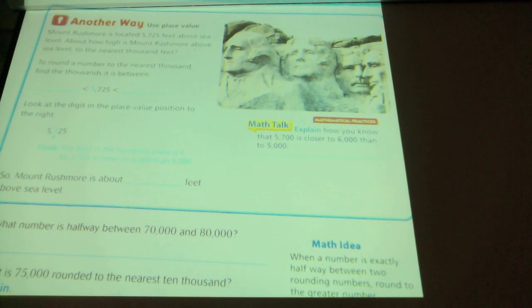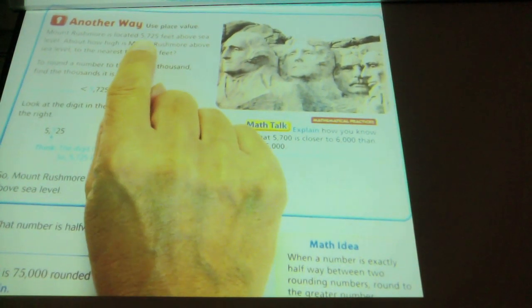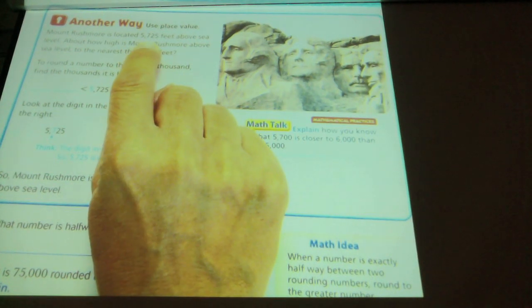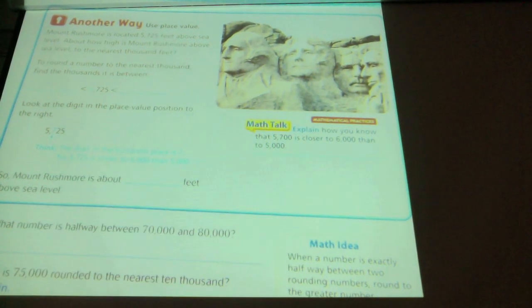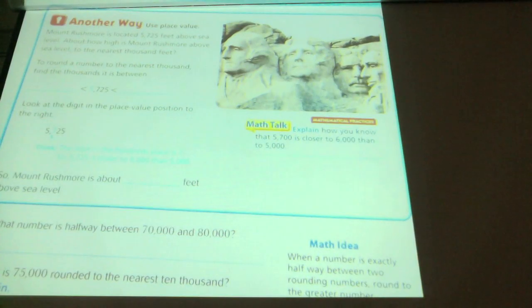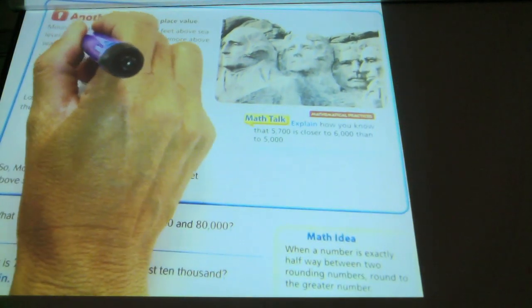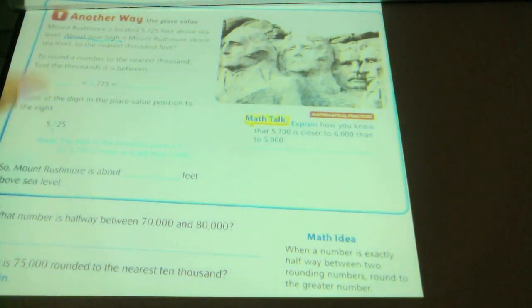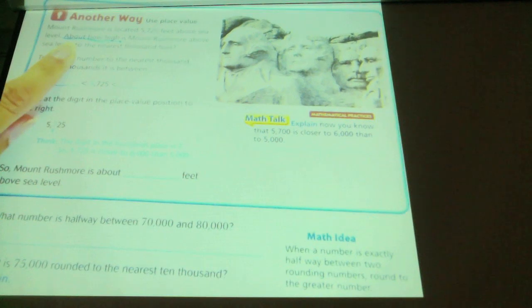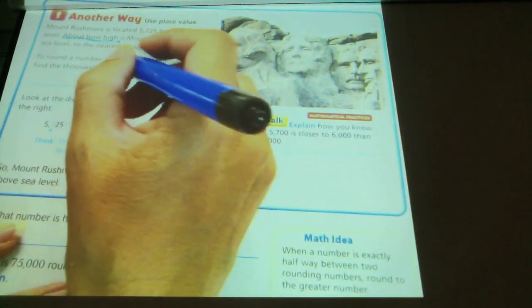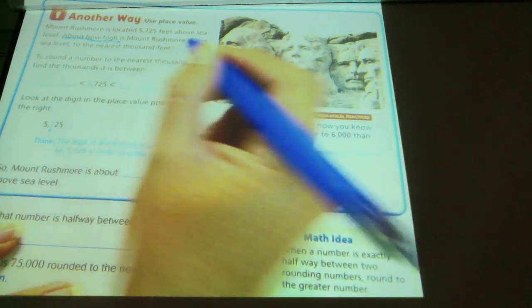Another way to use place value. Mount Rushmore is located, let's read this number together. 5,700 feet above sea level. About how high is Mount Rushmore above sea level? To the nearest 1,000 feet. So, first of all, what is the question asking us? What are they asking us? About how. And I'm going to circle about how high, or underline about, because the about tells us I'm going to round or estimate. I'm going to round to estimate about how high. How high it is above sea level. And then it does tell me to the nearest 1,000 feet.